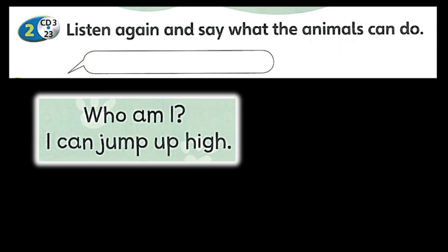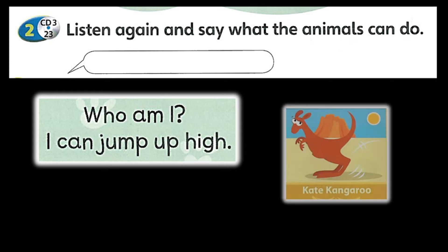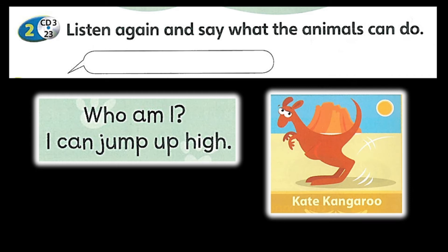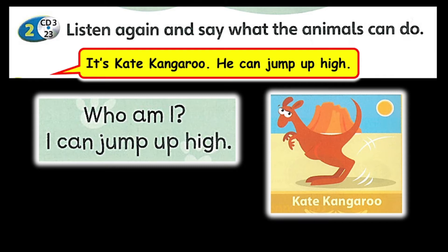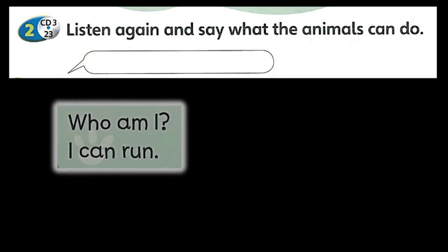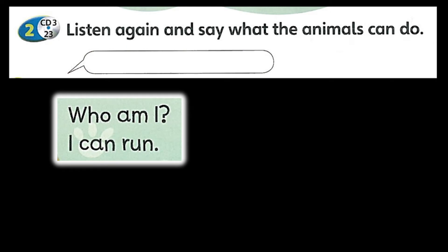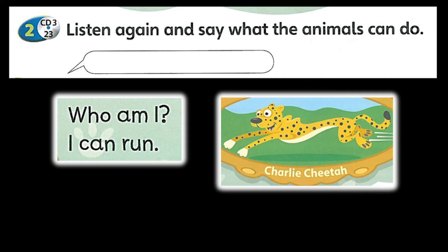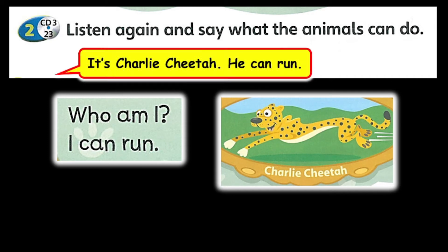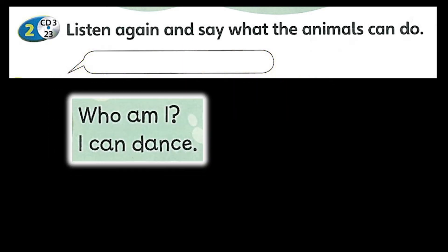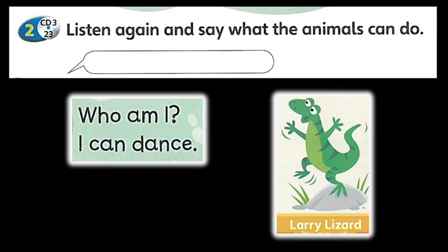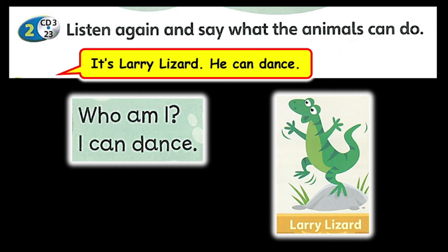Who am I? I can jump up high! Woo-hoo! It's Kate Kangaroo. She can jump up high. Who am I? I can run. It's Charlie Cheetah. He can run. Who am I? I can dance. It's Larry Lizard. He can dance.